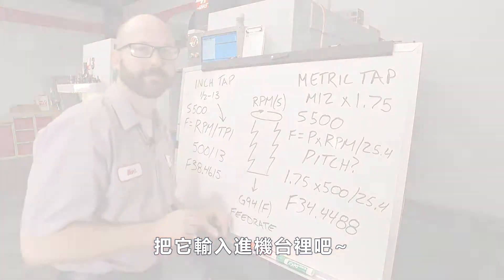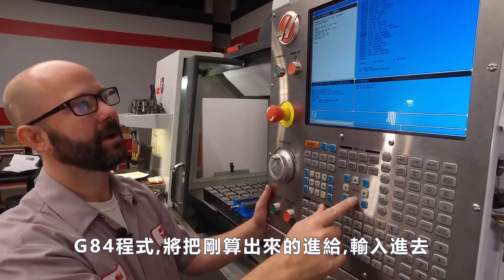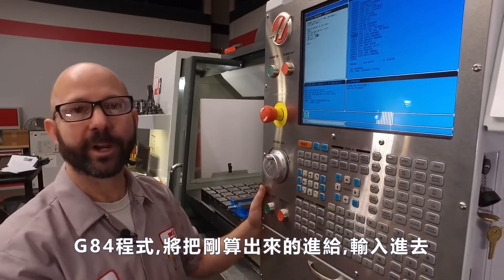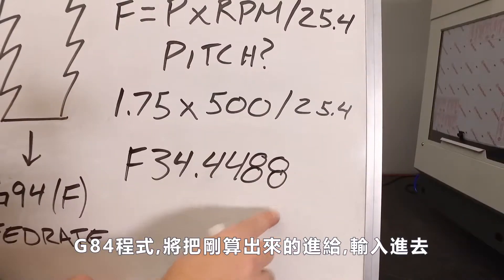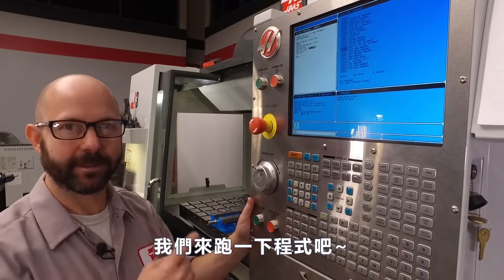Let's plug these into my program. In this program, we're going to tap that M12 hole. On our G84 line, we're going to add in the feed rate that we just calculated. F34.4488. With that done, let's run the tap.